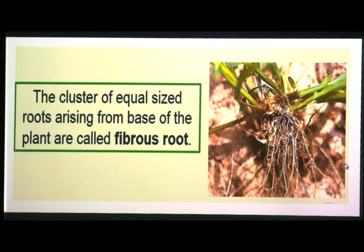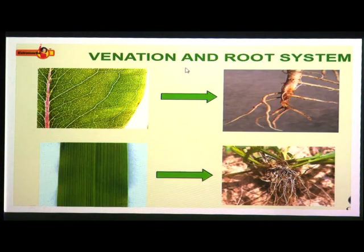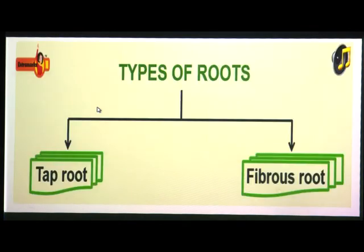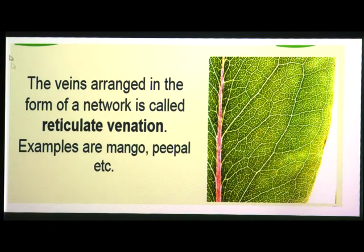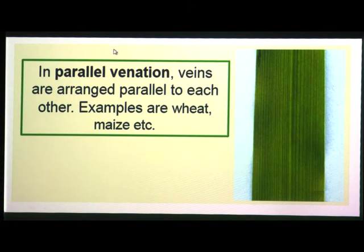Examples of plants with fibrous roots are grass, maize, wheat, onion, and rice. Now let us look at the relationship between venation and root system. As we discussed with leaves, one type of leaf has reticulate venation, where veins form a network.